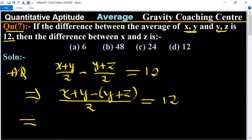Multiply by 2 implies that x plus y minus y plus z equal to 12 times 2, 24. So y, y cancel. So x minus z equal to 24.